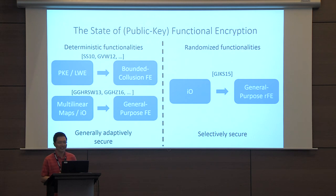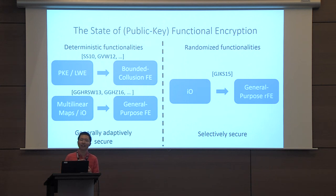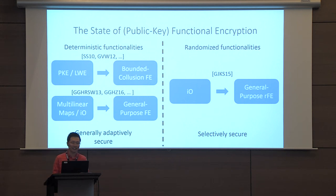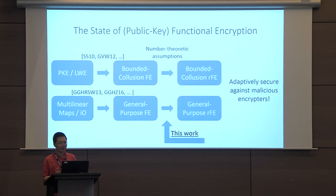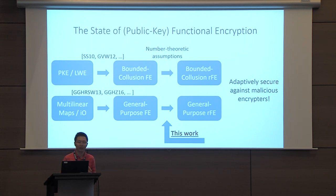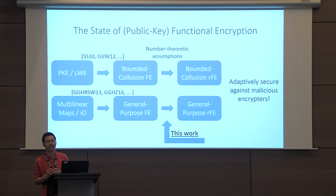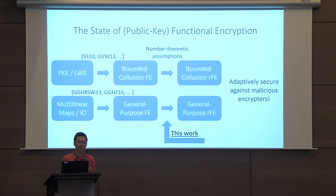To summarize, prior to this work, randomized functional encryption had only one construction based on IO. Using this generic transformation, starting from a simulation-secure functional encryption scheme for deterministic functionalities and several ingredients instantiable from the DDH and RSA assumptions, we can take all existing knowledge about deterministic FE and bootstrap it into corresponding schemes for all randomized functionalities. As an added bonus, we get adaptive security even against malicious encryptors.